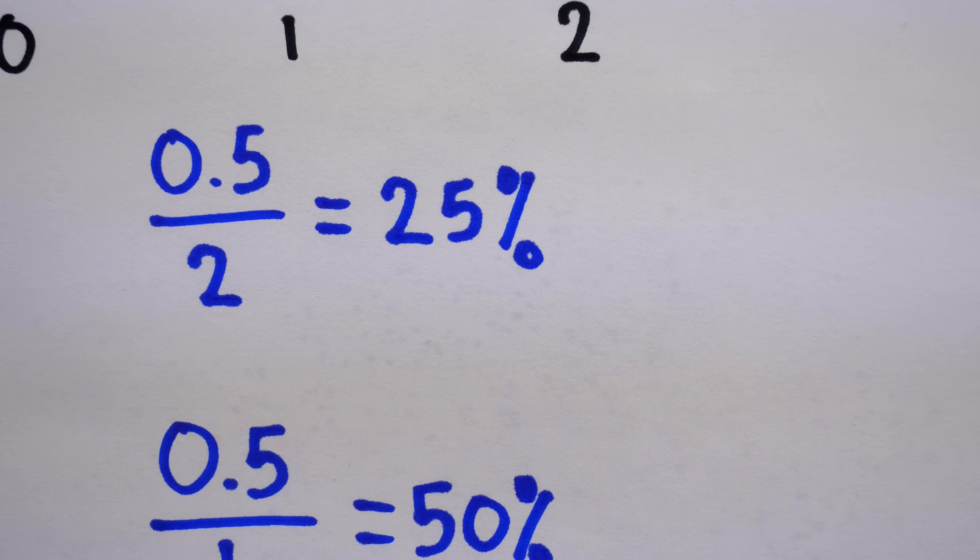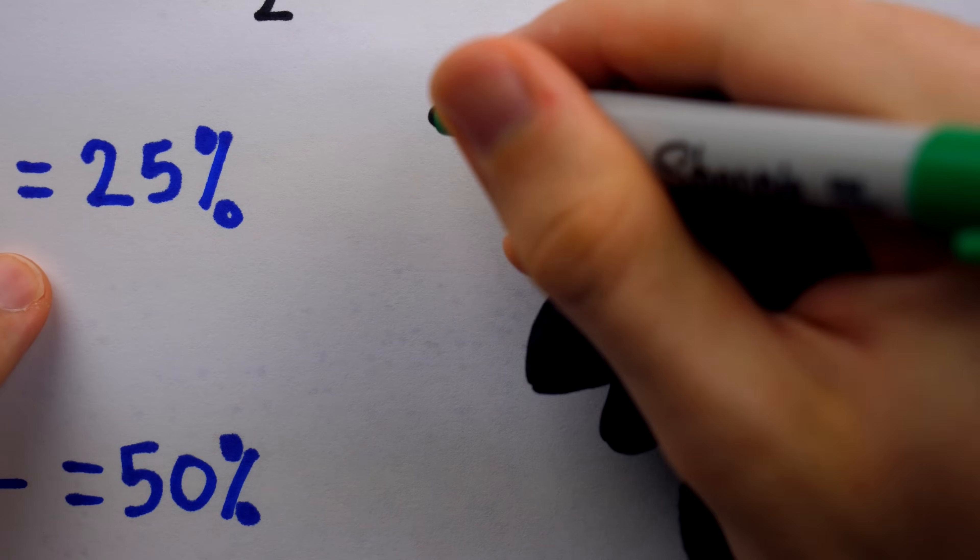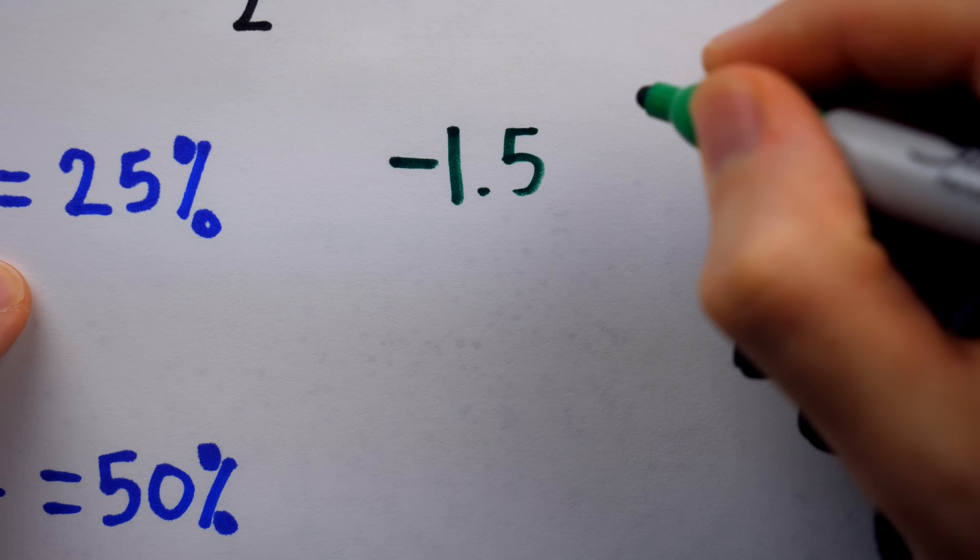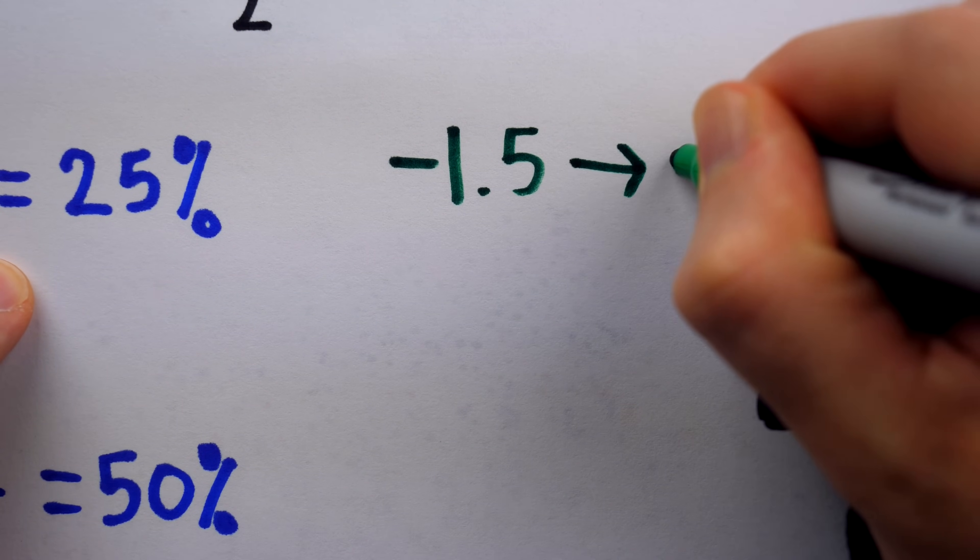Of course, this exact same line of argumentation would work to prove precisely the opposite in the negatives, where negative 1.5 would be rounded up to negative 1. But you know what? Let's not talk about that.